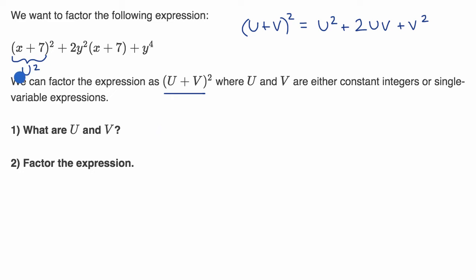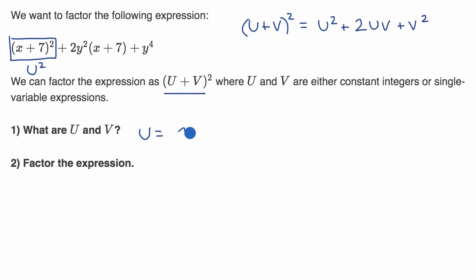Let me be careful. Can we express this entire thing here as u squared? If u squared equals x plus seven squared, that means u is going to be equal to x plus seven. And then this term here would have to be v squared.